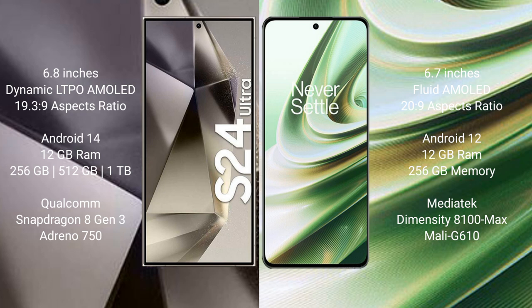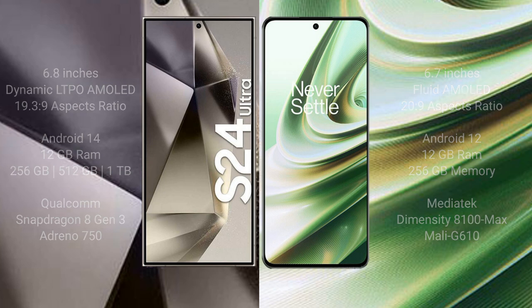OnePlus 10R comes with 12GB RAM and 256GB internal storage, powered by a MediaTek Dimensity 8100 Max processor and Mali-G610 GPU.